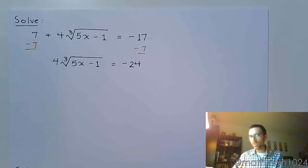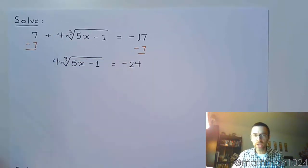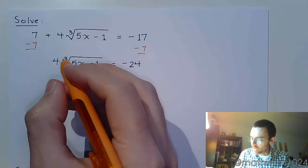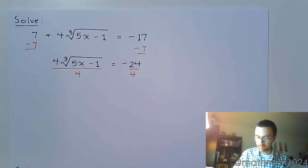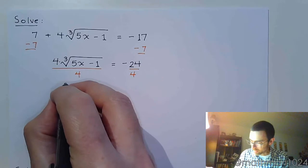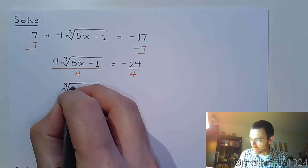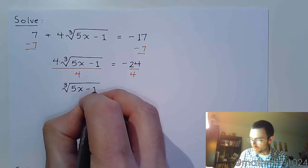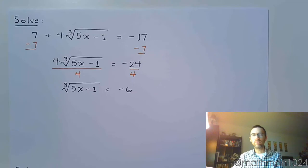Now I know some people may want to try to go ahead and cube both sides because of the cube root. But you really should get rid of that coefficient first. So we can undo that by dividing both sides of the equation by 4.